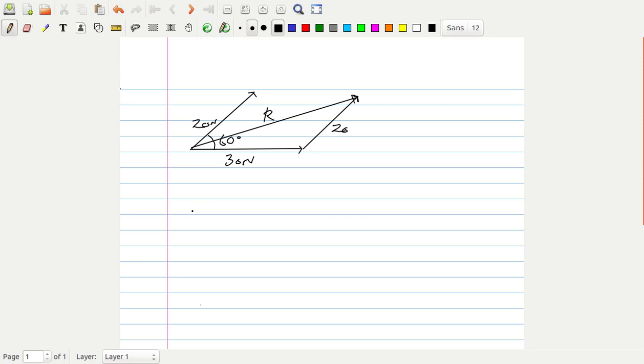Now because it's not a right angle triangle, we can't use Pythagoras' rule to work out R. But we can use the cosine rule. And from this we can say that R squared is equal to 20 squared plus 30 squared minus 2 times 20 times 30 times cos alpha.